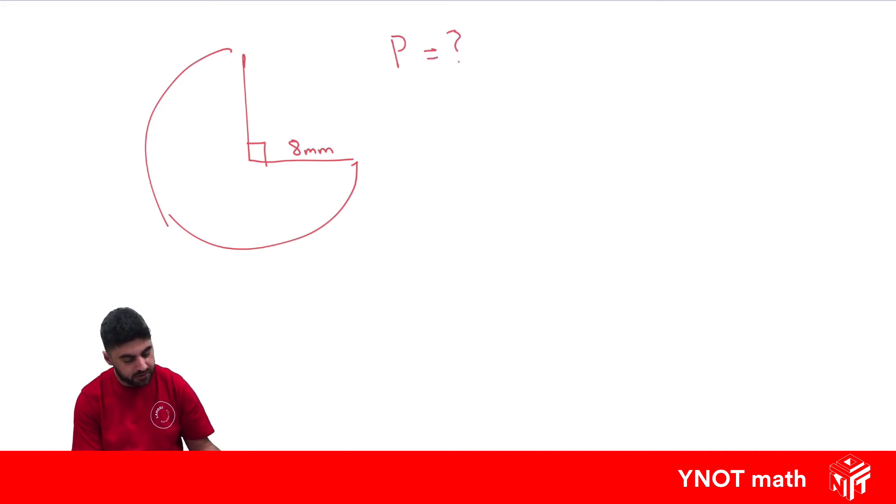Well, to do that, we're going to first need the arc length around the edge. And we just learned the formula for that. We know the arc length equals the angle of the sector over 360 times 2πr.